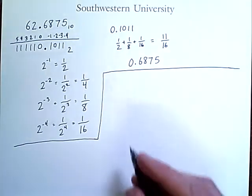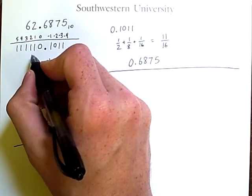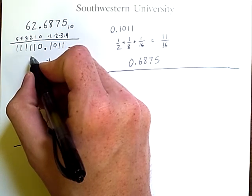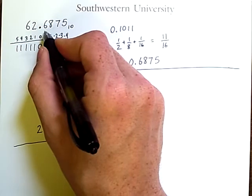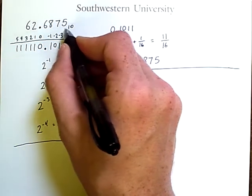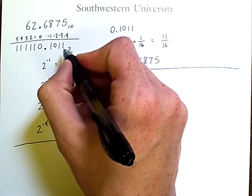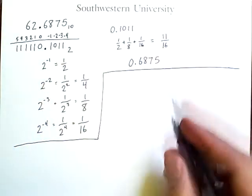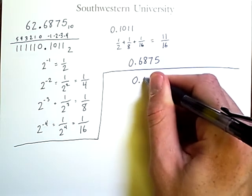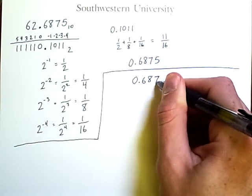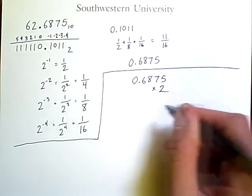Well, we already know how to convert from 62 to binary by a process of repeated division by 2. We can convert from this fractional portion of the number to binary using a process of repeated multiplication by 2 as follows. I have 0.6875. I'm going to multiply this by 2.